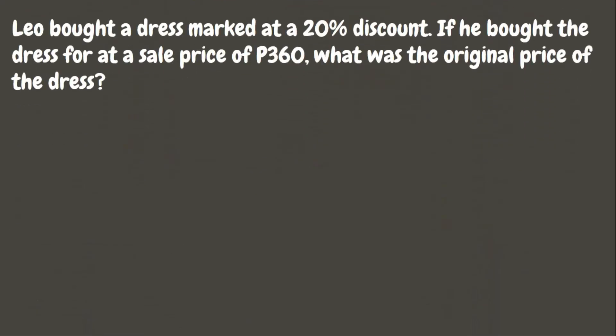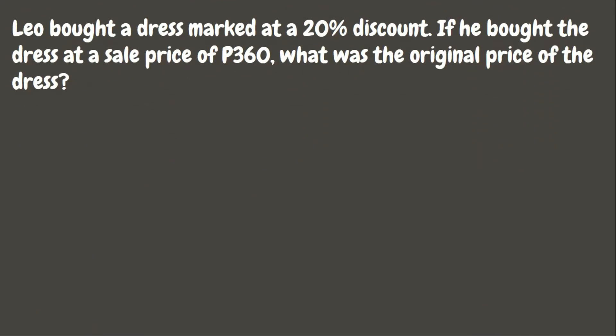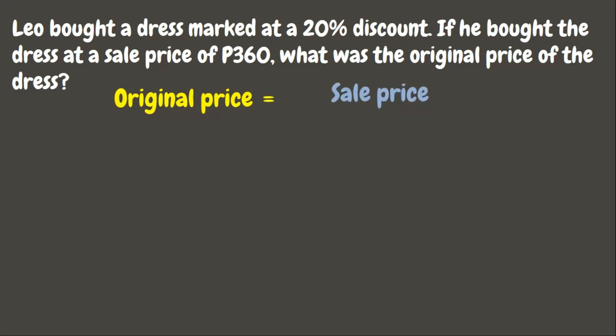Now let's try another one. Lea bought a dress marked at a 20% discount. If she bought the dress at a sale price of 360 pesos, what was the original price of the dress? We still have a discount problem, but this time we only have the discount rate and the sale price. To solve for the original price, we simply need to divide the sale price.